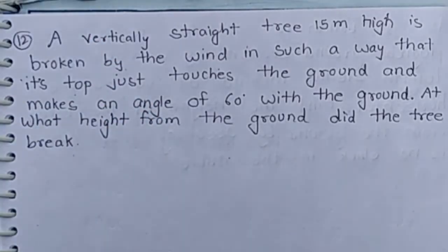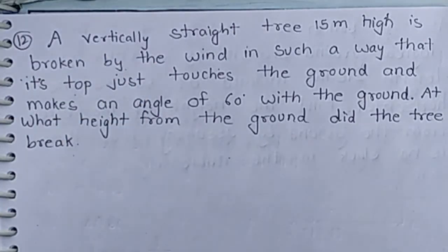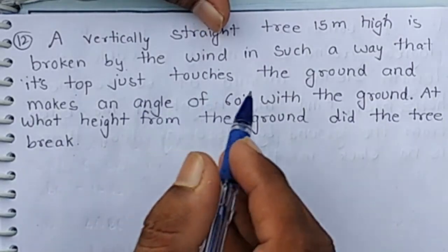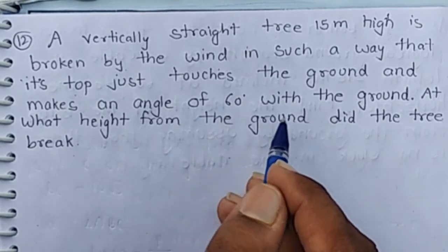Good morning class. It is question number 12. A vertically straight tree 15 meter high is broken by the wind in such a way that its top just touches the ground and makes an angle of 60 degree with the ground.